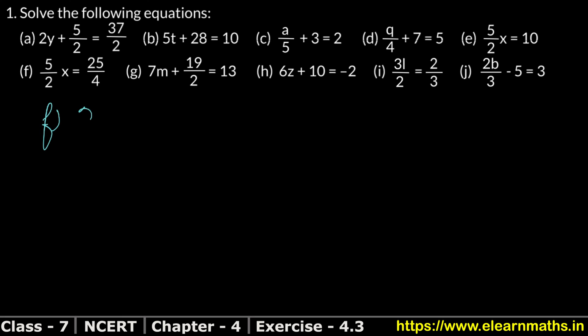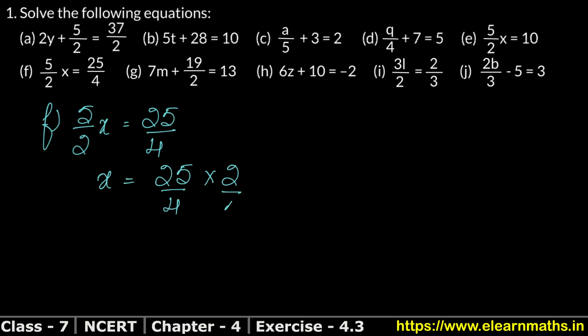Part f: 5/(2x) = 25/4. This is the same case as the last part — an 'upon' term with the variable. x stays in place; 2 comes up as multiply and 5 goes down as divide on the right side. So x = (25/4 × 2)/5. Cancelling gives x = (25 × 2)/(4 × 5).